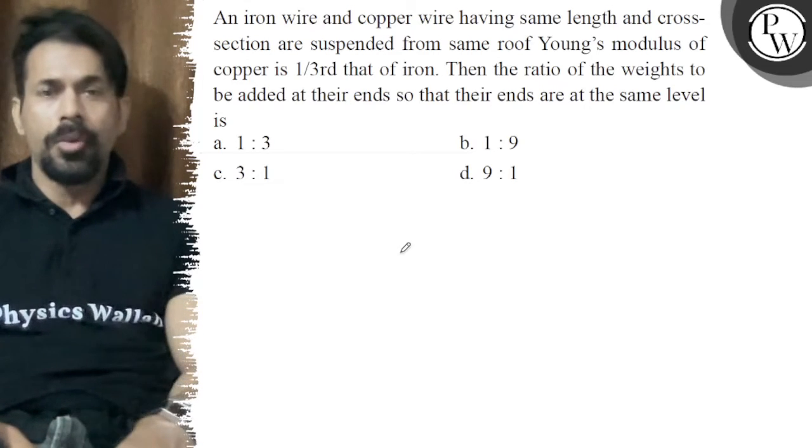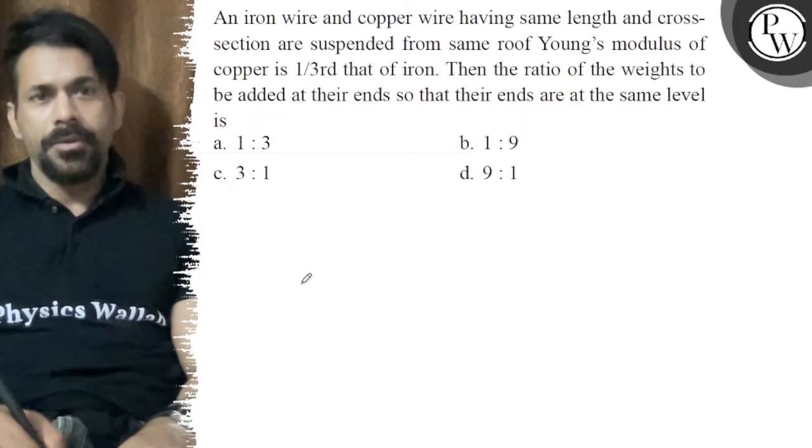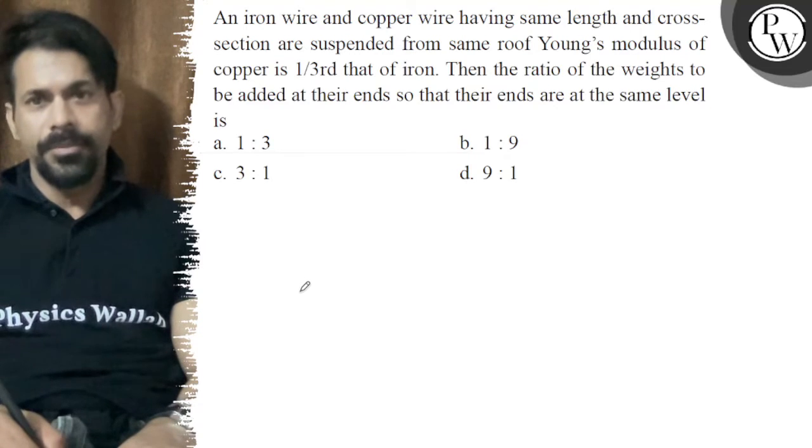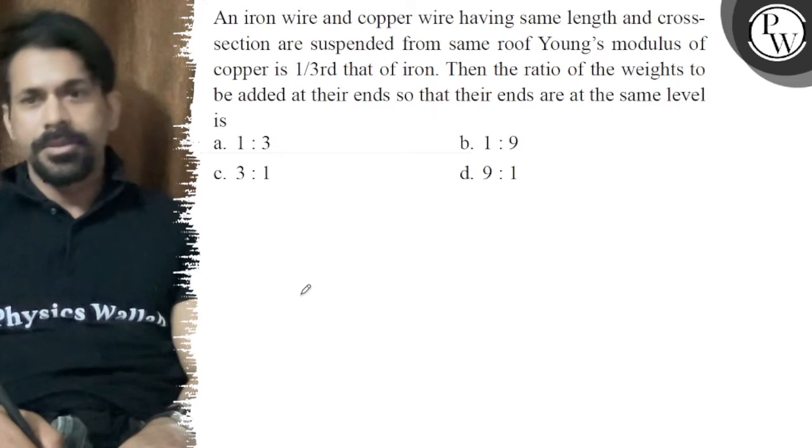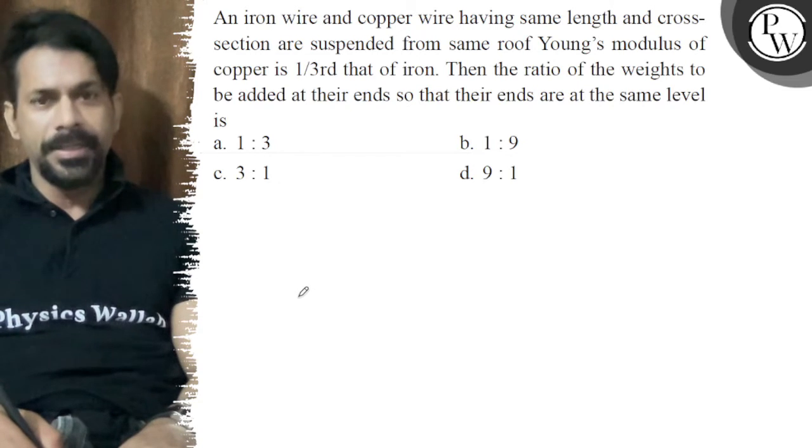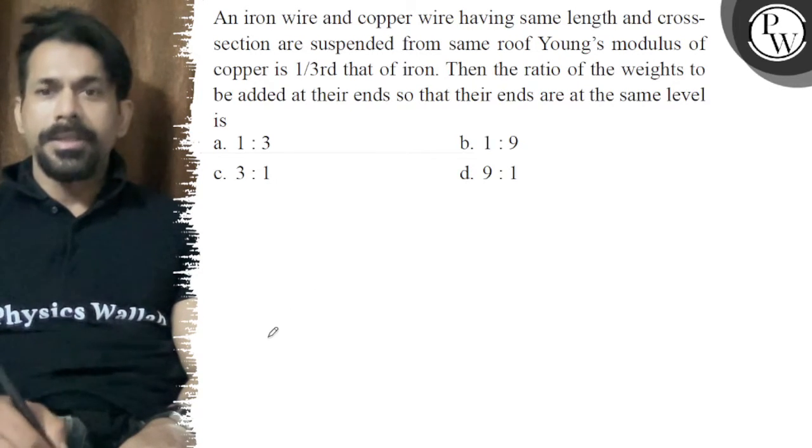Hello, let's see the question. An iron wire and copper wire having the same length and cross-sectional area are suspended from the same roof. Young's modulus of copper is one third that of iron. Then the ratio of the weights to be added at their ends so that their ends are at the same level.